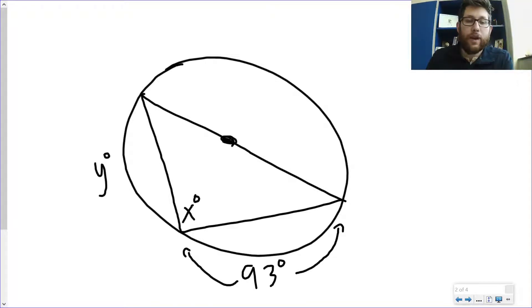Let's solve for x and y. Well, x is an inscribed angle of a semicircle. So this is just equal to 90 degrees. And then y, this is also a semicircle from this point to that point. So I'd do 180 minus 93, and y would be equal to 87.